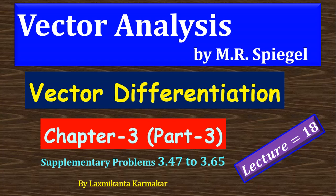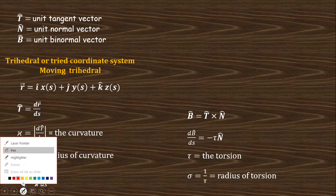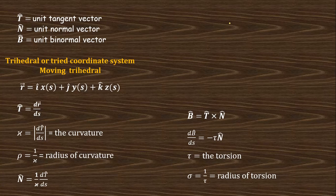Let us start for today the solution of the supplementary problems 3.47 to 3.65 which consist of the vector differentiation chapter 3. For this solution, you need to know the basics of these three parameters: the unit tangent vector, unit normal vector, and unit binormal vector.